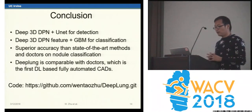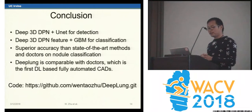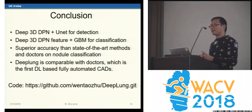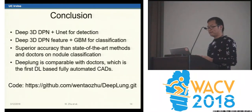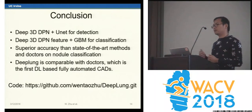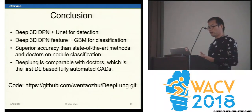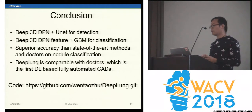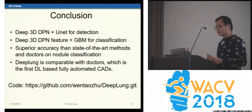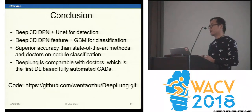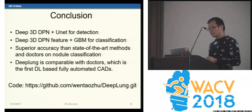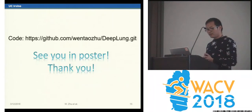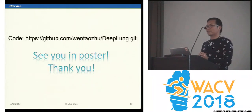In conclusion, we use a three-dimensional dual path network and U-Net to build a 3D Faster R-CNN for nodule detection, and we use 3D DPN and gradient boosting machine for nodule classification. The DPN achieves state-of-the-art performance, which is comparable with doctors. Code is also available. Thank you very much — welcome to our poster.